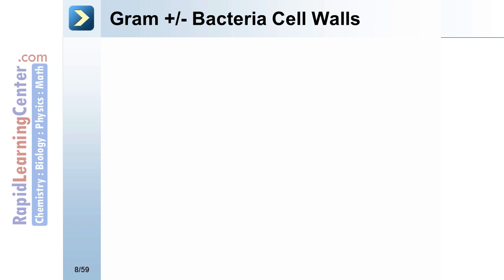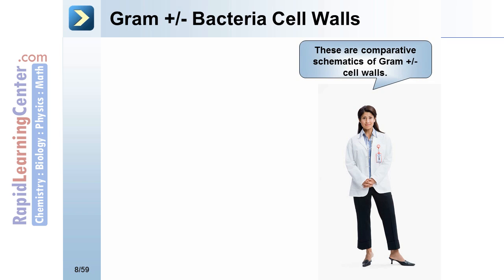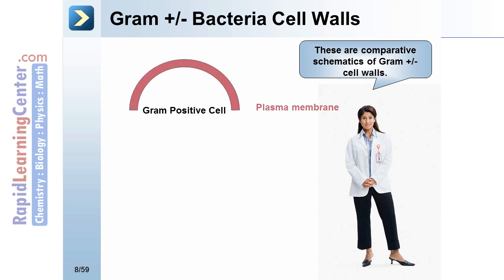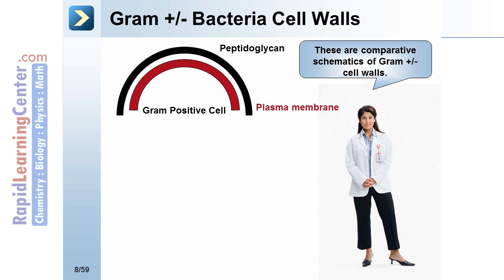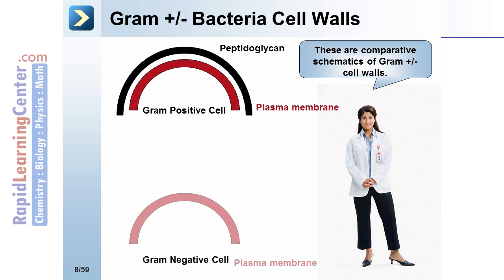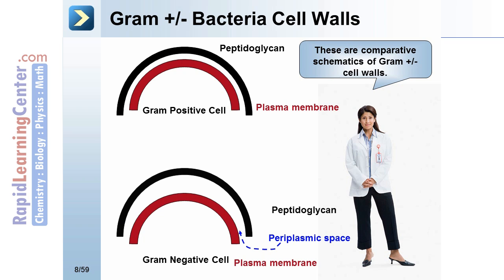Gram-positive and gram-negative bacteria cell walls. These are comparative schematics of gram-positive and gram-negative cell walls. The gram-positive cell consists of a plasma membrane and a peptidoglycan layer, while the gram-negative cell has the plasma membrane, a periplasmic space, the peptidoglycan layer, and an outer membrane. Gram-positive and gram-negative refers to the ability to take up a gram-stain; gram-negative cells do not stain with the gram-stain.